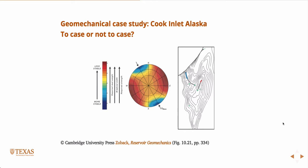This is a case study that Zoback presents in the book. In this case we look at the Cook Inlet, Alaska, where they were drilling from one initial vertical well with several kickoffs to horizontal legs and ran into some trouble. They actually built the geomechanical model after the fact and retrospectively asked: if we'd had the model beforehand, how would it have changed our decisions and how much money could we have saved?